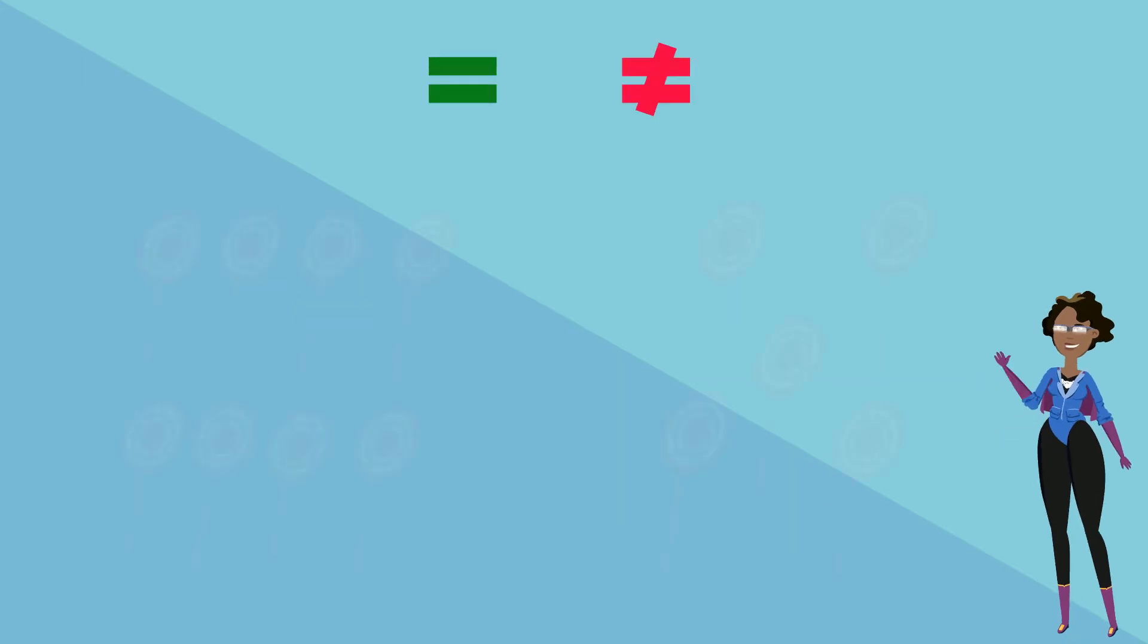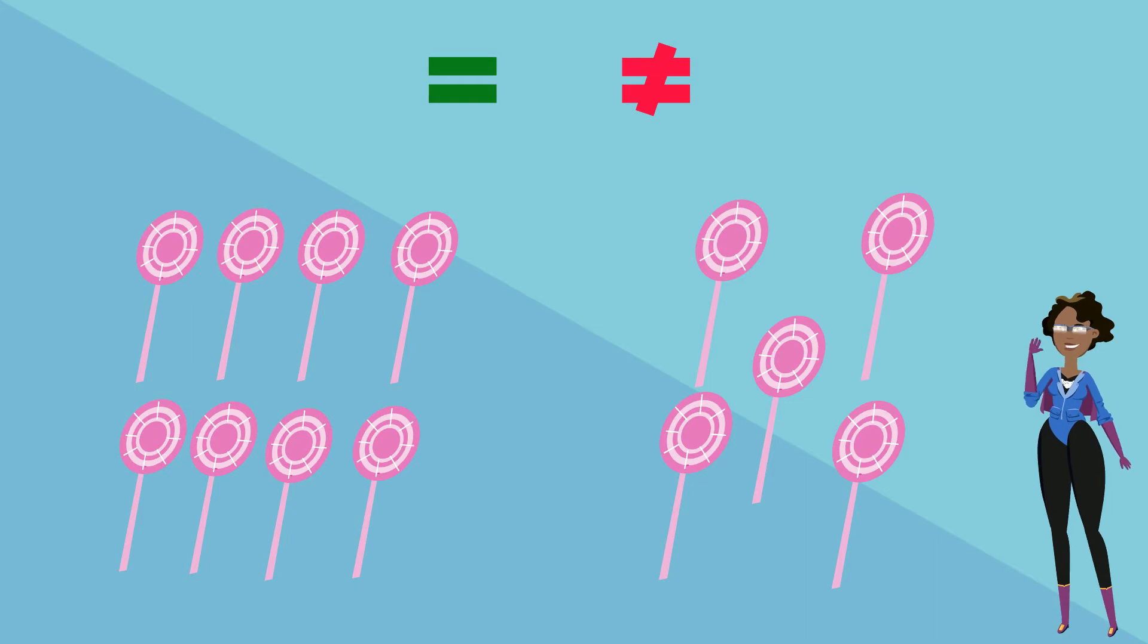Look at the lollipops in the set shown. What sign do you think should go in the middle of these sets? Well, let's count. That's right, an unequal sign will go there because both sets do not have the same amount.